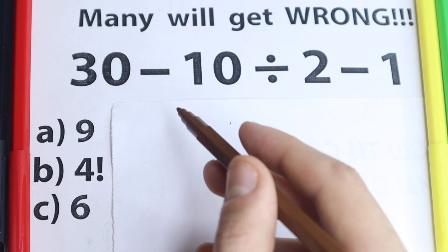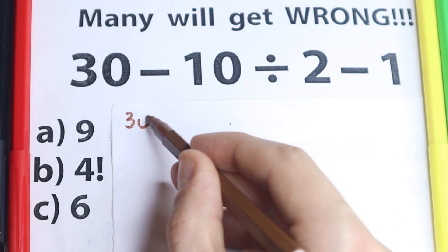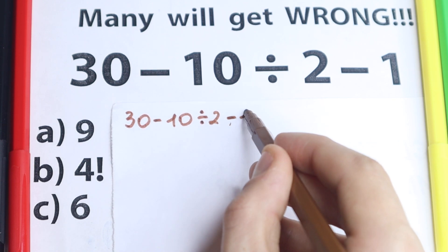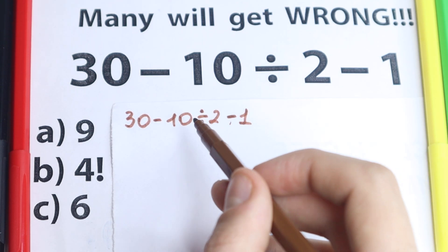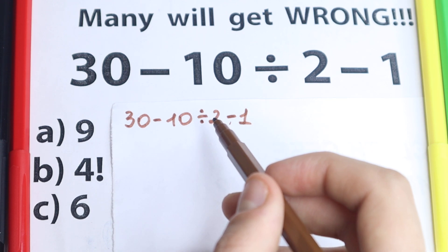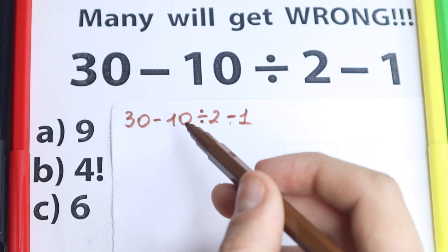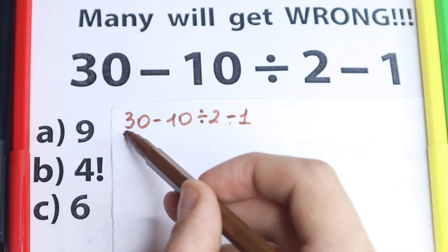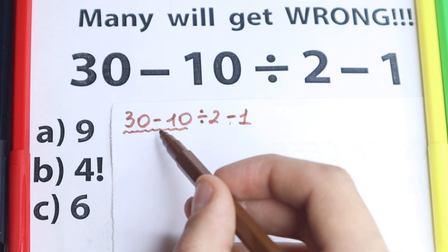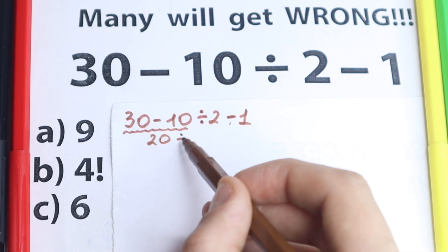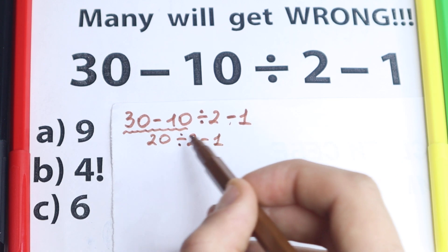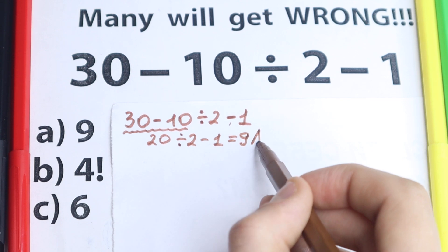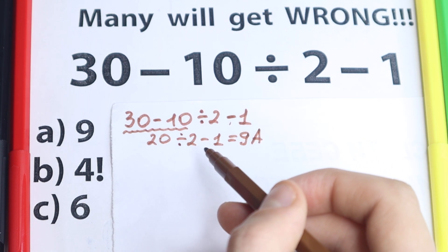So you choose one option and I'm going to solve it. First of all, I want to write this solution. We have 30 minus 10 divided by 2 and minus 1. I feel one part of you solve it like that. So one part of you goes from left to right: we have 30 minus 10, we get 20. 20 divided by 2 equals 10. 10 minus 1 equals 9. So as you can see, in the obvious way the answer is option A.